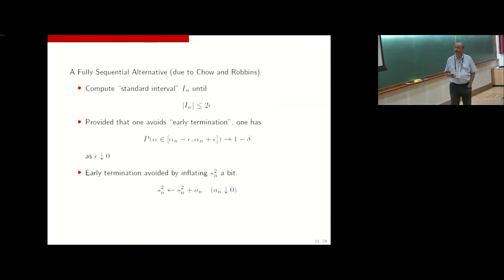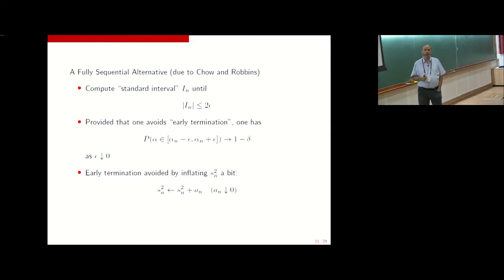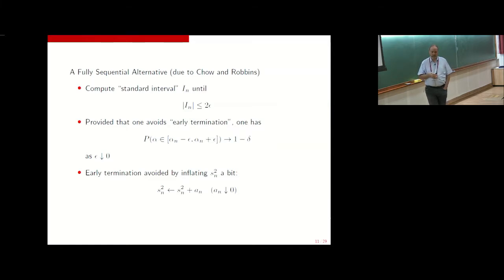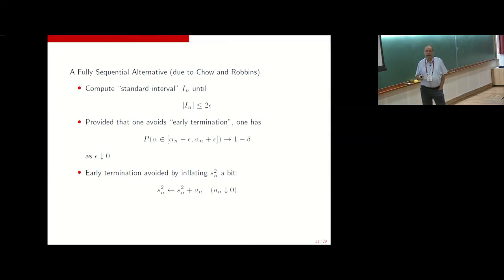What people really like to do is use a fully sequential algorithm: just compute the confidence interval obtained in the fixed sample size case and keep adding observations until that interval resolves down to a half-width with the required precision epsilon. This algorithm was studied by Chow and Robbins in the 1960s. There's a nice limit theorem: as the precision epsilon goes to zero — which effectively forces the sample size n to go to infinity — you do indeed get the correct coverage. That's what Chow and Robbins proved.